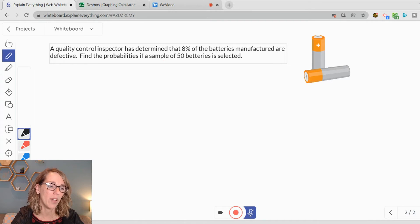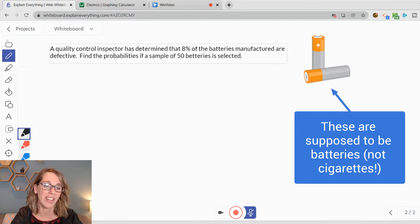In this first example, a quality control inspector has determined that 8% of the batteries manufactured are defective. Find the probabilities if a sample of 50 batteries is selected.